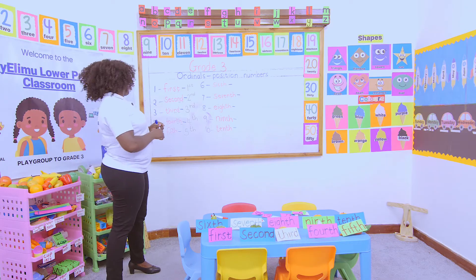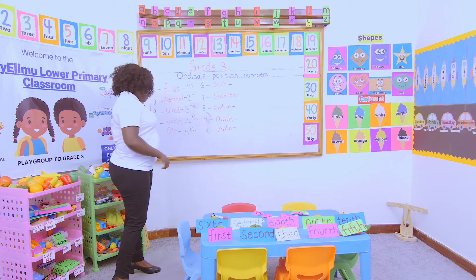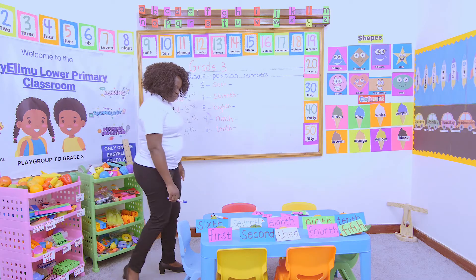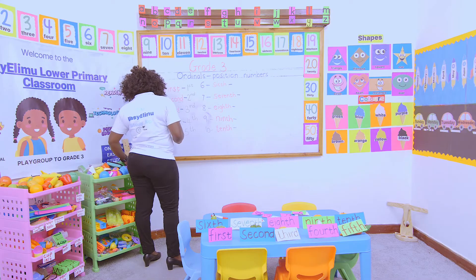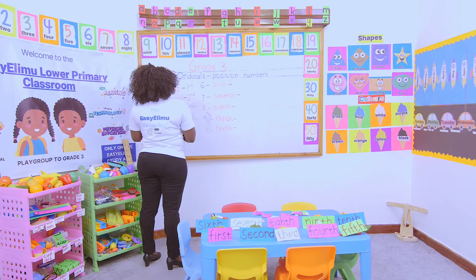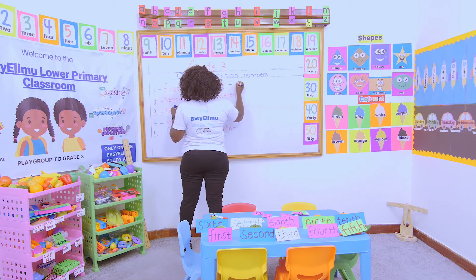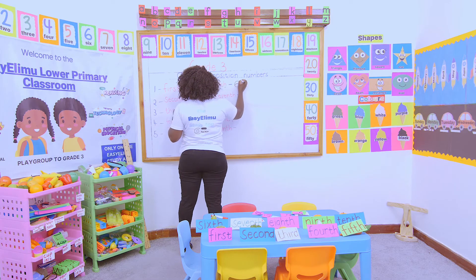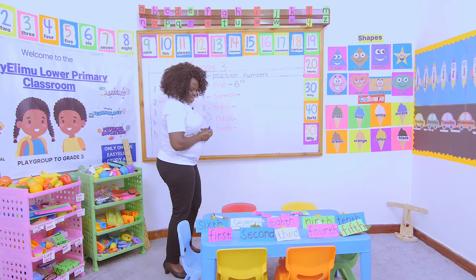Now we are on sixth, seventh, eighth, ninth, and tenth. What are we supposed to do? The same way we did the previous ones is the same way we are going to do these ones. So what happens here? I will take my number — here it is six — and then take the last two letters, which is 'th', to give us 6th.